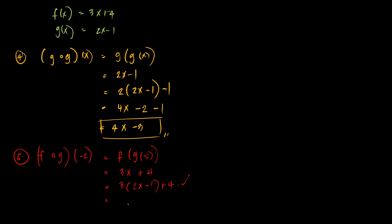First, let's simplify: 3 times 2x gives 6x, 3 times negative 1 gives negative 3, plus 4. Simplify: we have 6x plus 1. Then insert negative 2: 6 times negative 2 plus 1, which gives negative 12 plus 1, which gives negative 11. So f composed of g of negative 2 equals negative 11.